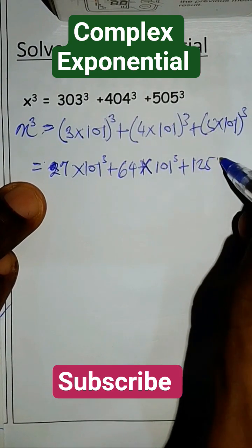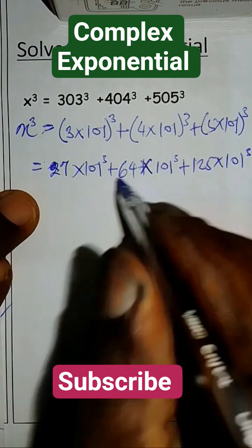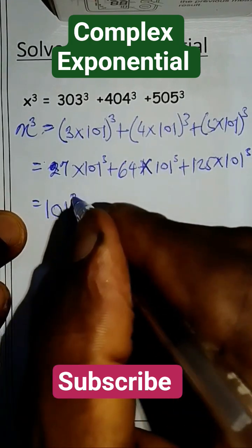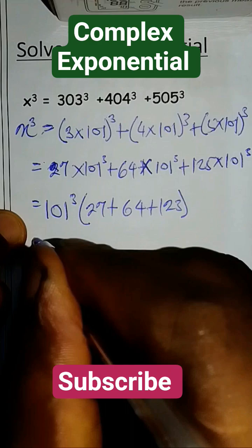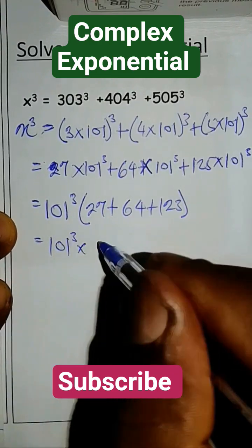So you can see 101 is common to all of them so we factorize that out. 101 raised to the power 3 into 27 plus 64 plus 125, which is equal to 101 times 216.